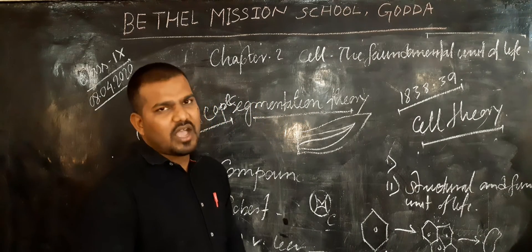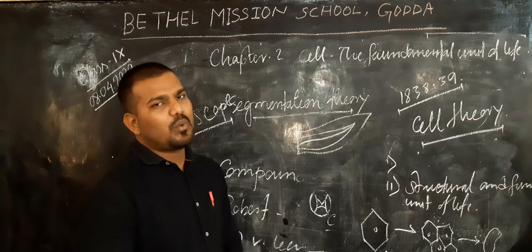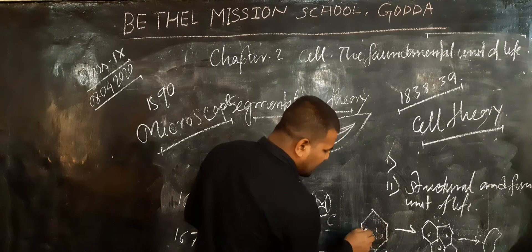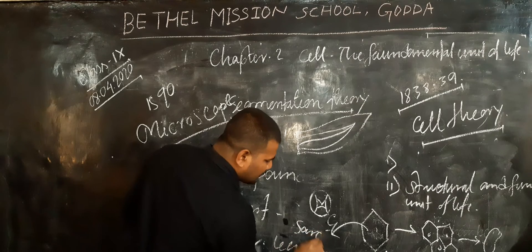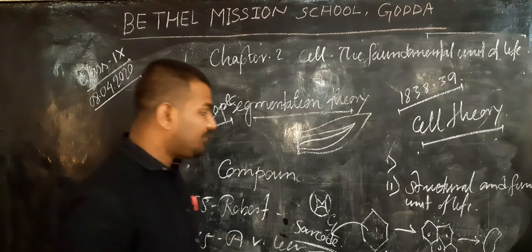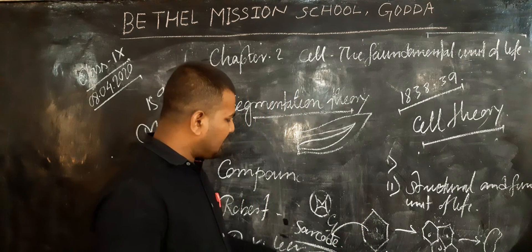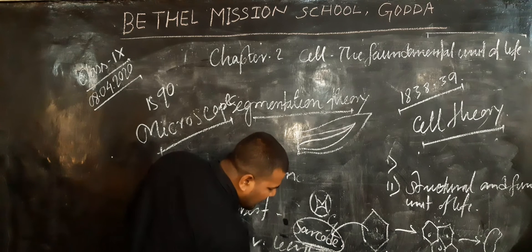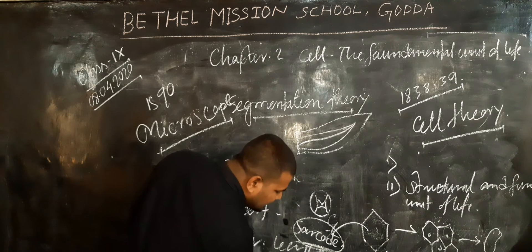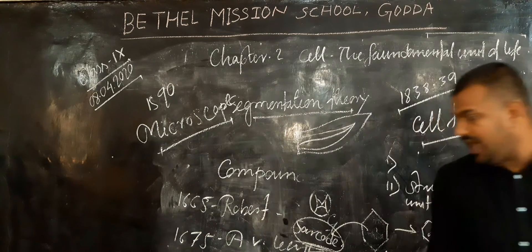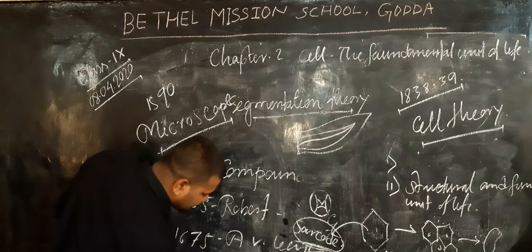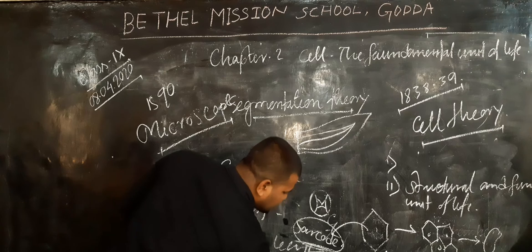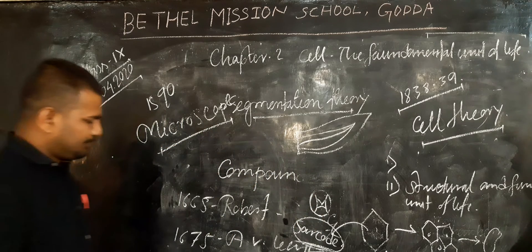The scientist Dujardin was the first to observe the inner portion of the cell, and found that within the inner portion of the cell there is a fluid-like substance. Dujardin coined the term 'sarcode' for this fluid. Later on, the scientist Purkinje changed the term sarcode to 'protoplasm.' Within the protoplasm, the most important part was discovered by Robert Brown — that is the nucleus, known as the brain of the cell.